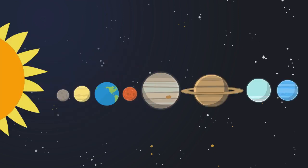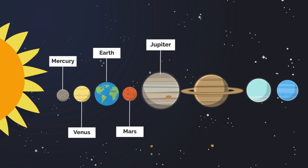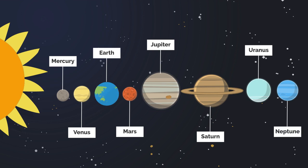There are eight planets revolving around the sun. They are Mercury, Venus, Earth, Mars, Jupiter, Saturn, Uranus, and Neptune.